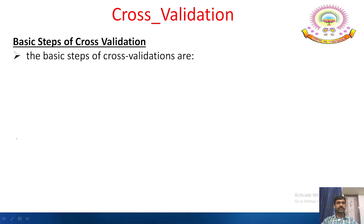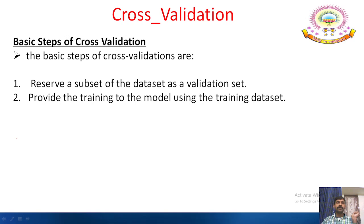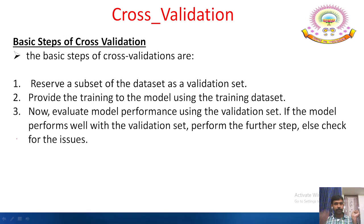The basic steps of cross validation are: first, reserve a subset of the dataset as a validation set; second, provide training to the model using the training dataset; third, evaluate model performance using the validation set. If the model performs well with the validation set, perform further steps; otherwise, check for issues. There are two categories of cross validation methods: non-exhaustive and exhaustive methods.